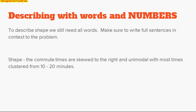Now, we want to describe with words and numbers. We're still going to talk about our four main characteristics of data: shape, center, spread, outliers.